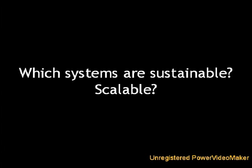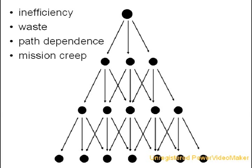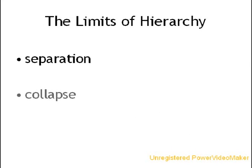Which system do you think is sustainable? Scalable? We all know that certain hierarchies can suffer from inefficiency, waste, path dependence — which you might think of as organizational bad habits — and mission creep. Despite these problems, hierarchies can still perform intact. But there are organizational limits to hierarchies. Three ways hierarchies reach their limit are separation, collapse, or transition.